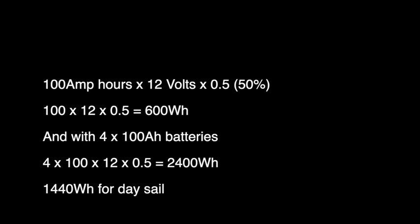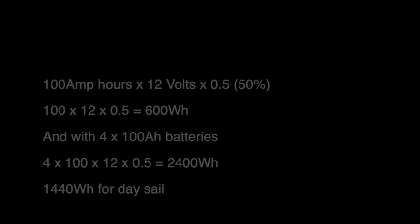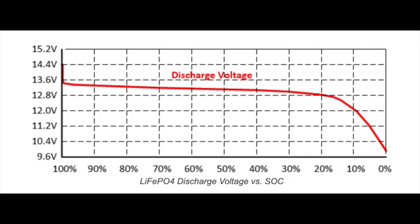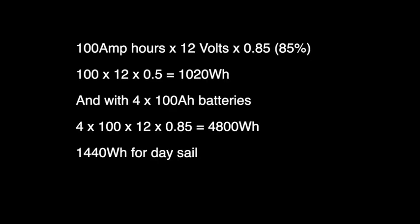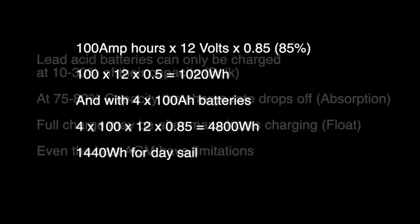Now let's look at the same calculations for a lithium-ion battery. Now lithium-ion batteries are slightly different. You can discharge them down to 20 or sometimes 10% of their full capacity. Makes a hell of a difference to the maths. So same maths: 100 amp hours times 12 volts times 0.85, or 85%, that gives us 1020 watt hours. And if we do it with four batteries, that gives us 4800 watt hours. That's a massive change.